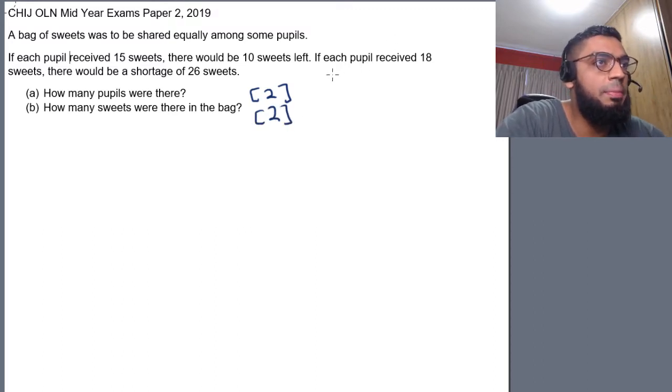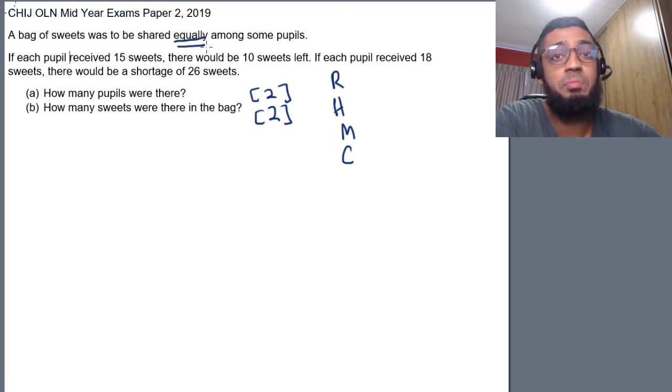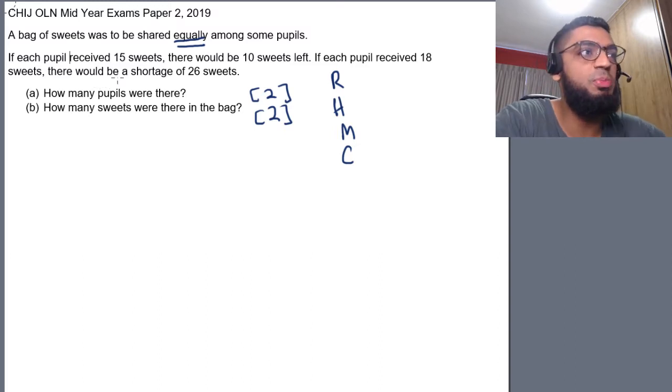Let's employ RHMC. Let's read the question once more. And as we are reading, I highlight, we will underline the keywords and key numbers. A bag of sweets was to be shared equally among some pupils. So, every pupil will get the same number of sweets.